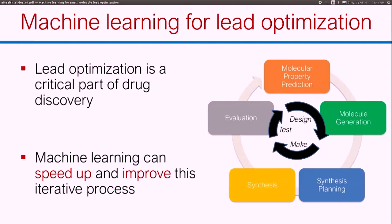In particular, we focus on the lead optimization process where, starting from a hit molecule, you go through a series of designing, making, and testing molecules, trying to eventually develop it into a drug candidate. Our thesis is that machine learning can be used to speed up and improve this process.